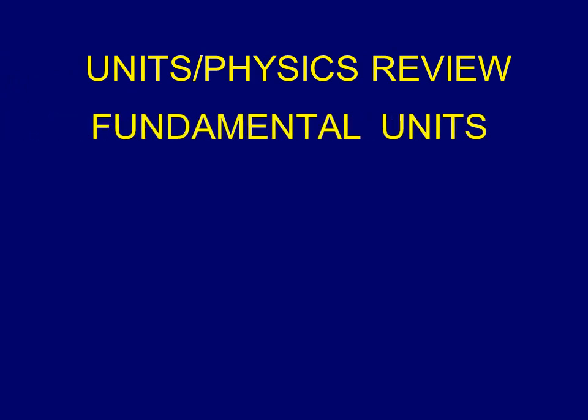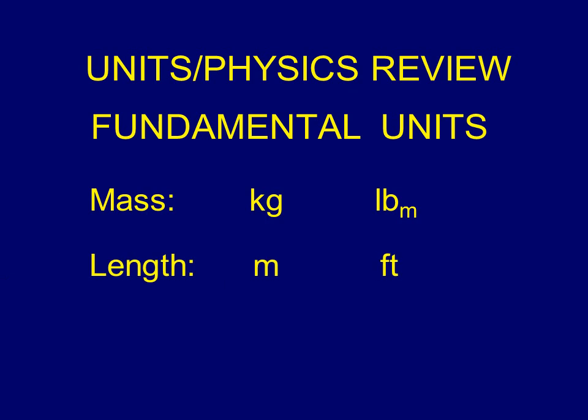Now I want to look at fundamental units through some basic laws of physics. The first fundamental unit is mass — in the metric or SI system we'd be looking at kilograms; in the English system we'd call it pound-mass. Another fundamental unit is length — meters or feet. Finally, we have time as a fundamental unit, which is seconds, the primary unit used in both the English and metric systems.